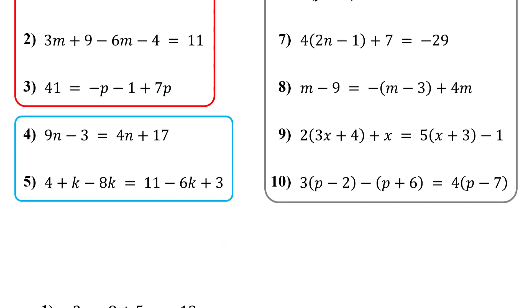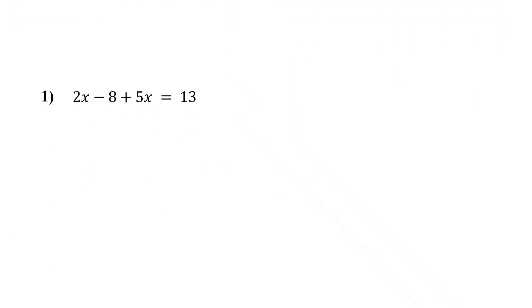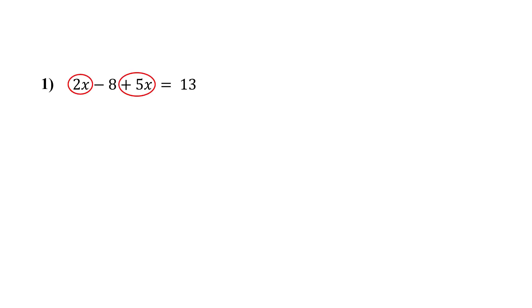Let's start with one where we combine like terms. On the left side of this equation, 2x and 5x are like terms. So our first step is to combine them. 2x plus 5x gives us 7x. Bring down the rest. This is now a two-step equation.